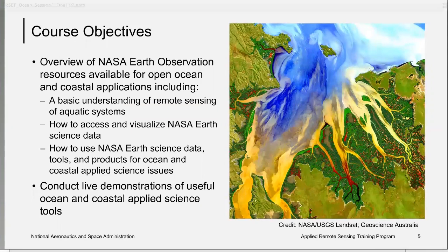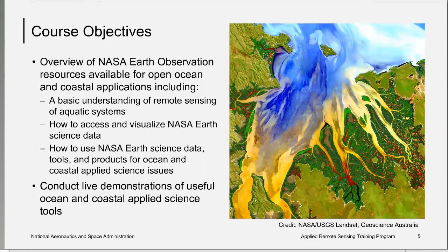We would like for you to recall from previous weeks the course objectives: to provide an overview of NASA Earth observation resources available for open ocean and coastal applications, including a basic understanding of remote sensing of aquatic systems, how to access and visualize NASA Earth science data, how to use NASA Earth science data tools and products for open ocean and coastal applied science issues, and to conduct live demonstrations of useful ocean and coastal applied science tools.